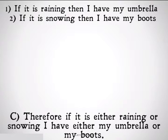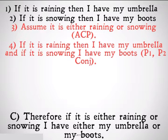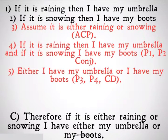Basically, what we're going to do is, instead of taking 15 or so steps to do this, we're going to do it in six, and we're going to use conditional proof. Because I want to conclude an implication — a conditional statement, an if-then statement — I'm going to take the if part of the statement, the antecedent, and I'm going to assume it. Assume that it's either raining or snowing. Then I'm going to conjoin my first two premises, and then I can use constructive dilemma to conclude the conclusion of that statement.